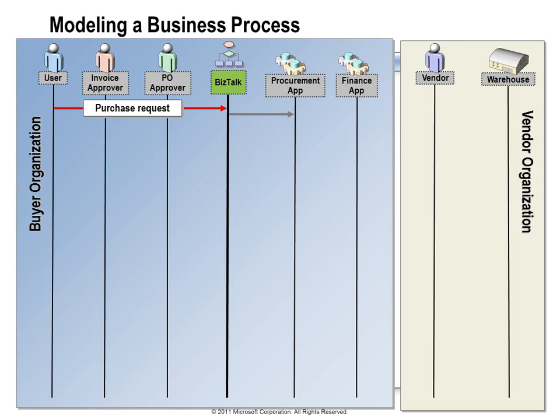The procurement app once again needs approval for this order. Instead of sending the request for approval directly to the manager, the procurement system will send that to BizTalk, which will forward it on. This gives us the possibility of using different delivery mechanisms — it could make sense to use email, or to send this request to a SharePoint site that serves as the manager's dashboard. At a minimum, if communication fails somewhere along the line, we can check with BizTalk and find exactly where that communication failure occurred.